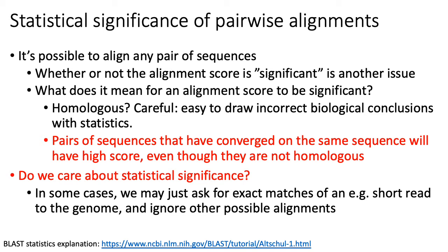Part of the problem is that one of the primary goals of sequence alignment is to identify homologous sequences. But it's hard to draw a direct connection between sequence similarity and homology, because if you have a pair of sequences that have converged onto the same sequence through separate independent means, those sequences will have a high alignment score even though they're not homologous. So high alignment scores don't necessarily imply homology — you can have highly scoring alignments between pairs of sequences that are not homologous.